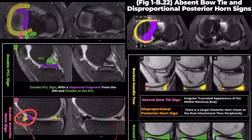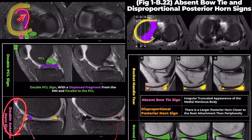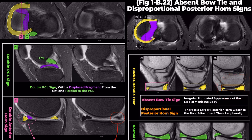When displaced anteriorly, the flipped meniscus exhibits the double anterior horn sign, and when displaced posteriorly, it manifests as the disproportionate posterior horn sign.